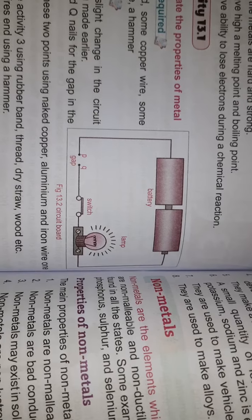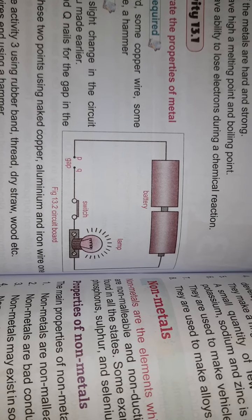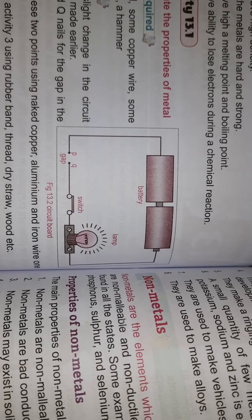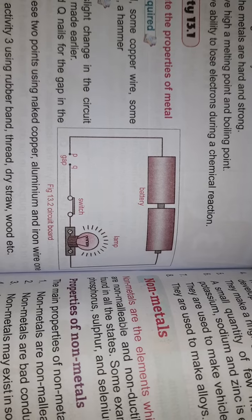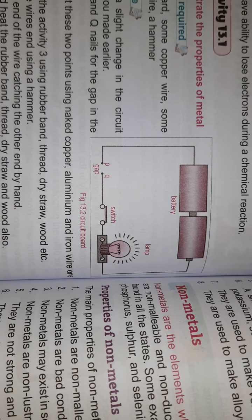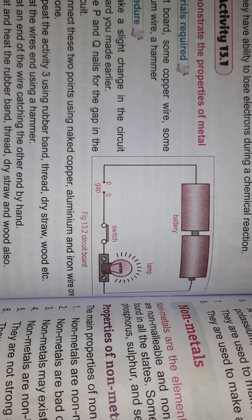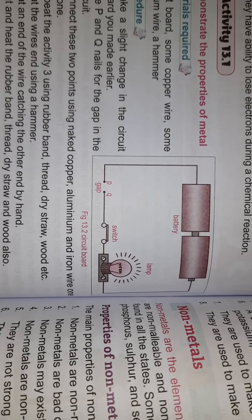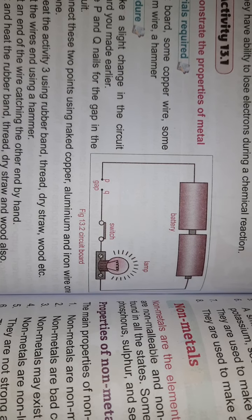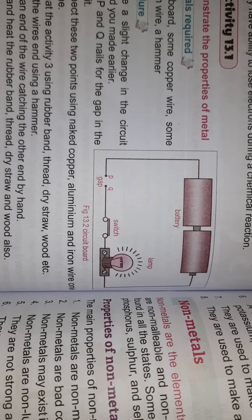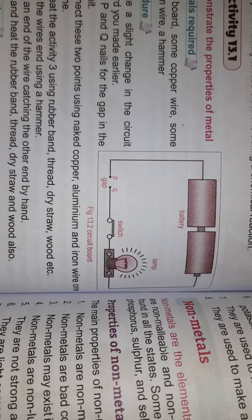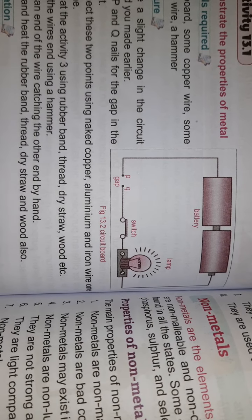When metal is placed in the circuit, the lamp glows. If you use non-metals like rubber band, thread, dry straw, or wood instead, the bulb will not glow because they are not good conductors of heat and electricity. This proves that metals are generally good conductors of heat and electricity.